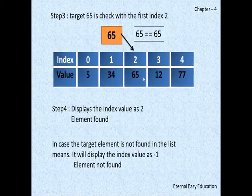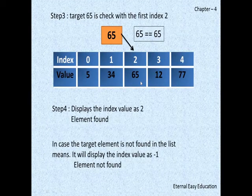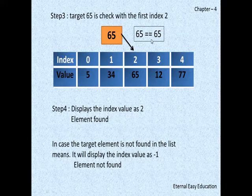So it has to move to the third step. The third element is 65. Now 65 is equal to 65. That is, both are the same number.